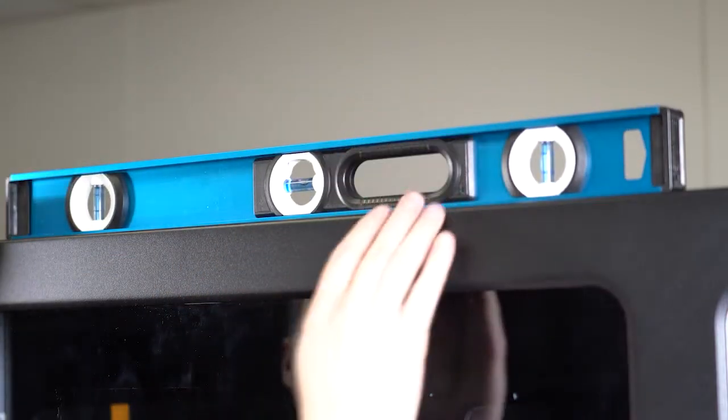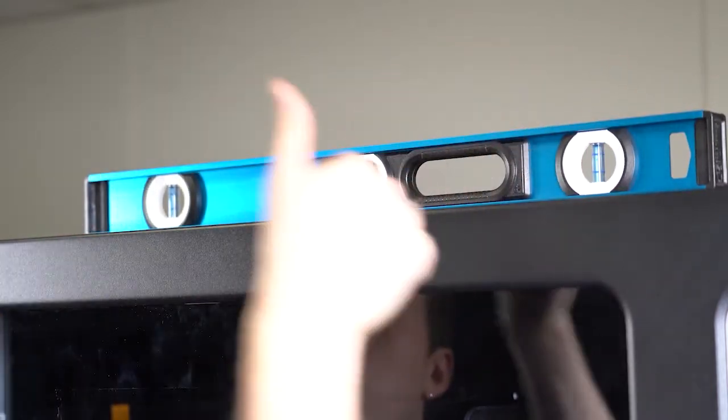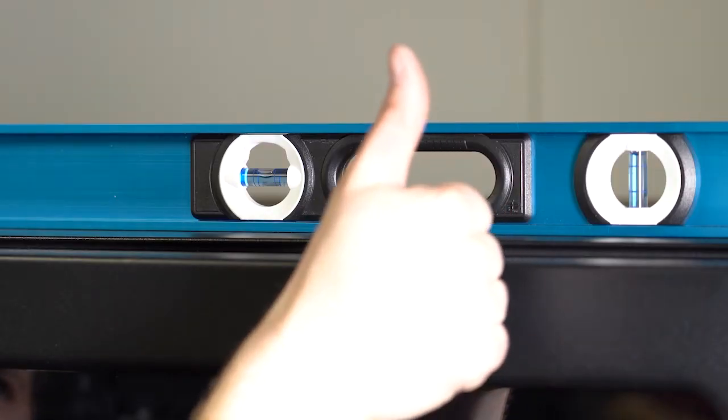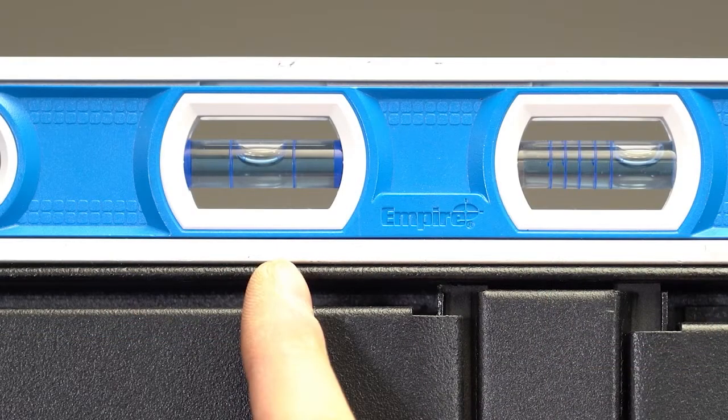Using a level, place it on top of the machine. Do not put the bubble level on the door but instead make sure it is on the cabinet. Using a 1-3/8 inch open end wrench, adjust the cabinet legs until the machine is level from side to side and front to back. Repeat the same process with the locker.